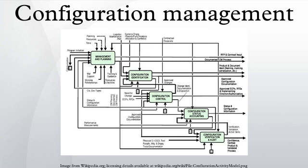Configuration status accounting includes the process of recording and reporting configuration item descriptions and all departures from the baseline during design and production. In case of suspected problems, the verification of baseline configuration and approved modifications can be quickly determined.